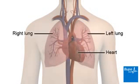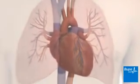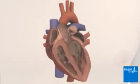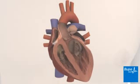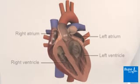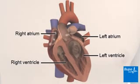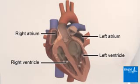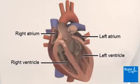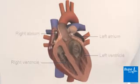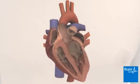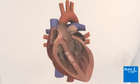Your heart is a muscular organ which lies in the centre of your chest. Your heartbeat is controlled by electrical impulses which travel across the heart making it contract. The atria contract first, sending blood into the ventricles. The ventricles then contract, sending blood to the lungs and around the body. Nerves supplying the heart change the rate at which impulses are sent across the heart muscle to meet the needs of the body.